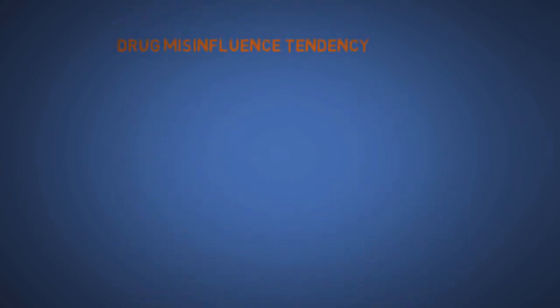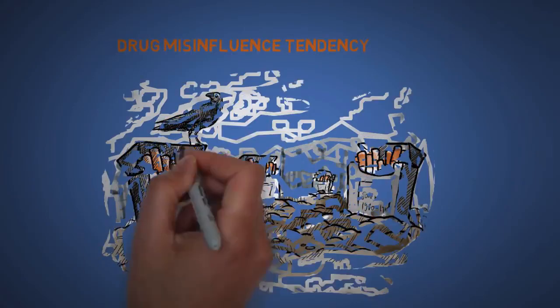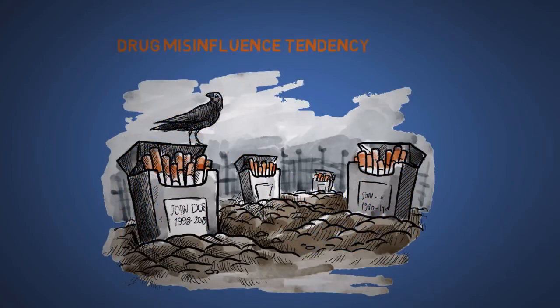The twentieth is the drug misinfluence tendency. This is a very strong tendency that costs lives. It is often supplemented by simple pain avoidance psychological denial.